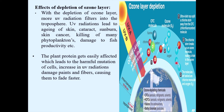Ozone depletion affects not only human beings but also plant life and animal life. With depletion of the ozone layer, more UV radiation filters into the troposphere, leading to aging of the skin, cataracts, sunburn, skin cancer, killing of phytoplankton, and damage to fish productivity. Plant proteins are easily affected, causing harmful mutations. Increasing UV radiation also damages paint and fibers, causing them to fade faster.